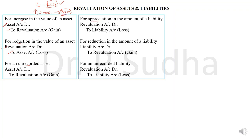For liabilities also, we will come across three situations: increase, decrease, or unrecorded liability. When there is an increase in liability or an unrecorded liability, it will result in a loss — opposite to assets. If there is a reduction in liability, it leads to a gain. If there is a loss due to liability, the entry is: Revaluation Account debit to Liability Account. For unrecorded liability, the entry is also: Revaluation Account debit to Liability Account. If there is a gain, the entry is: Liability Account debit to Revaluation Account.